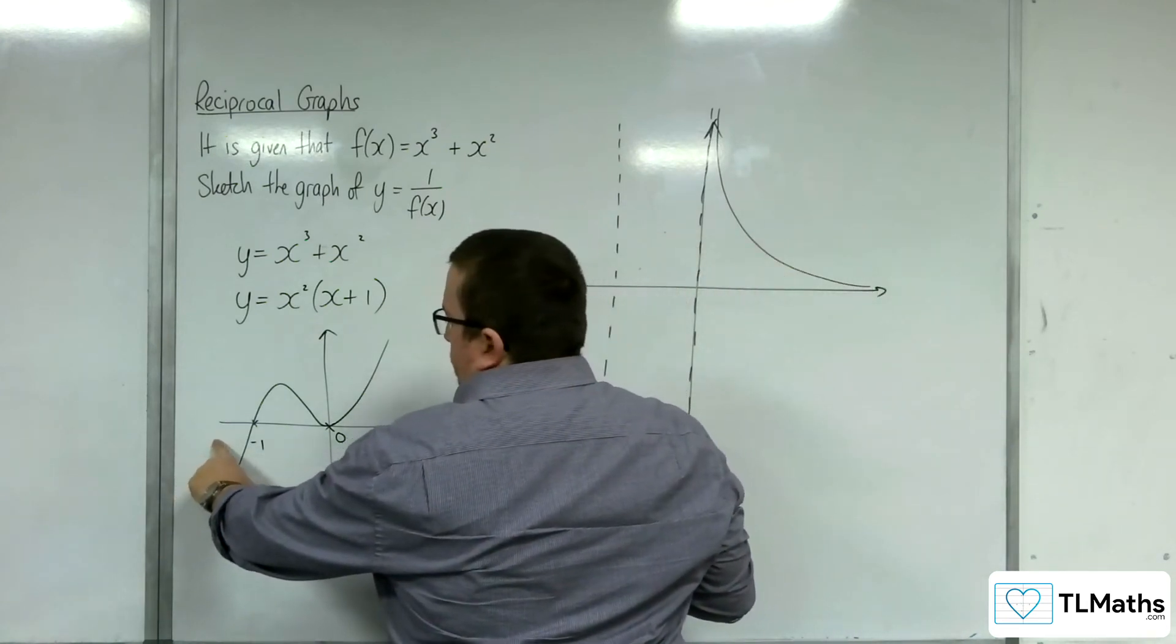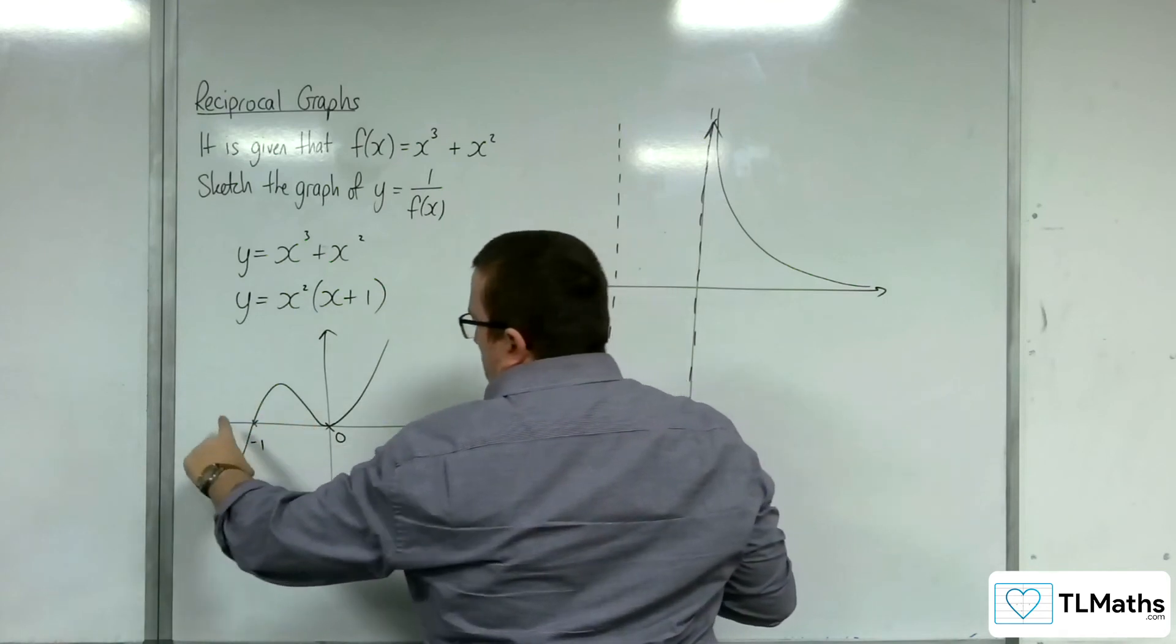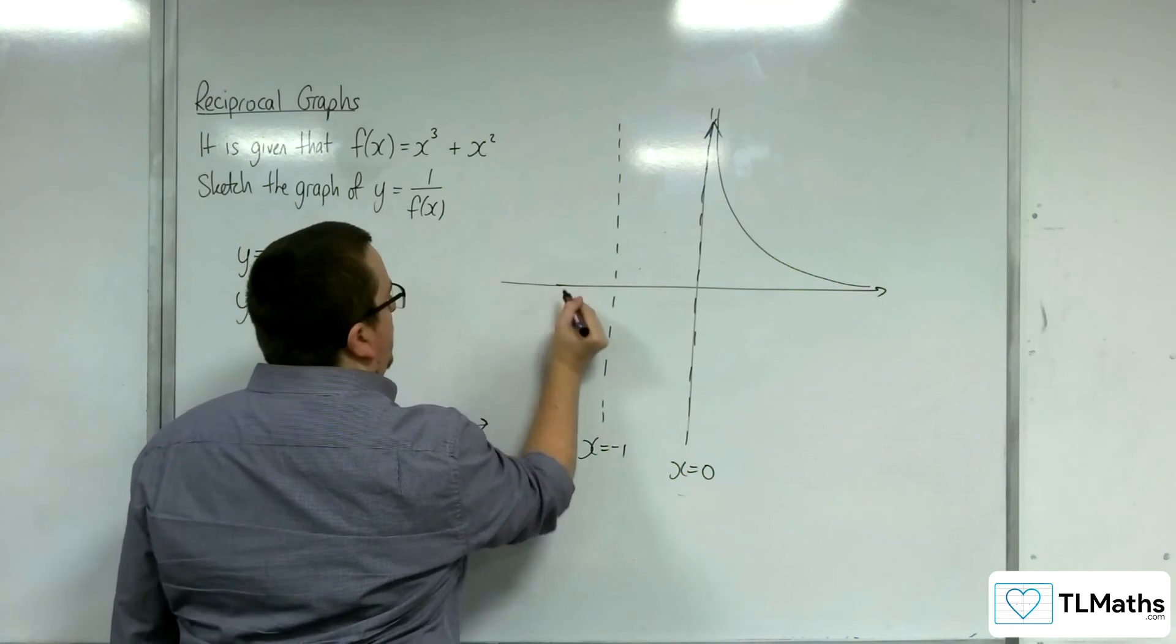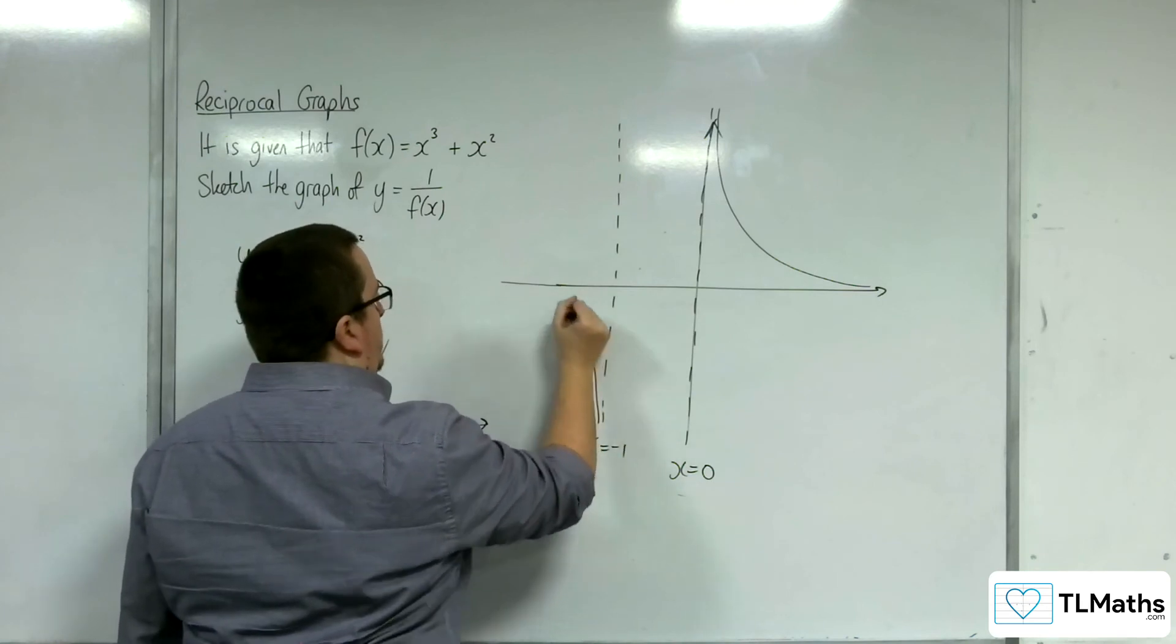To the left of minus 1, we can see that we've got a negative value here, so ours will be negative as well. And so it'll look like this.